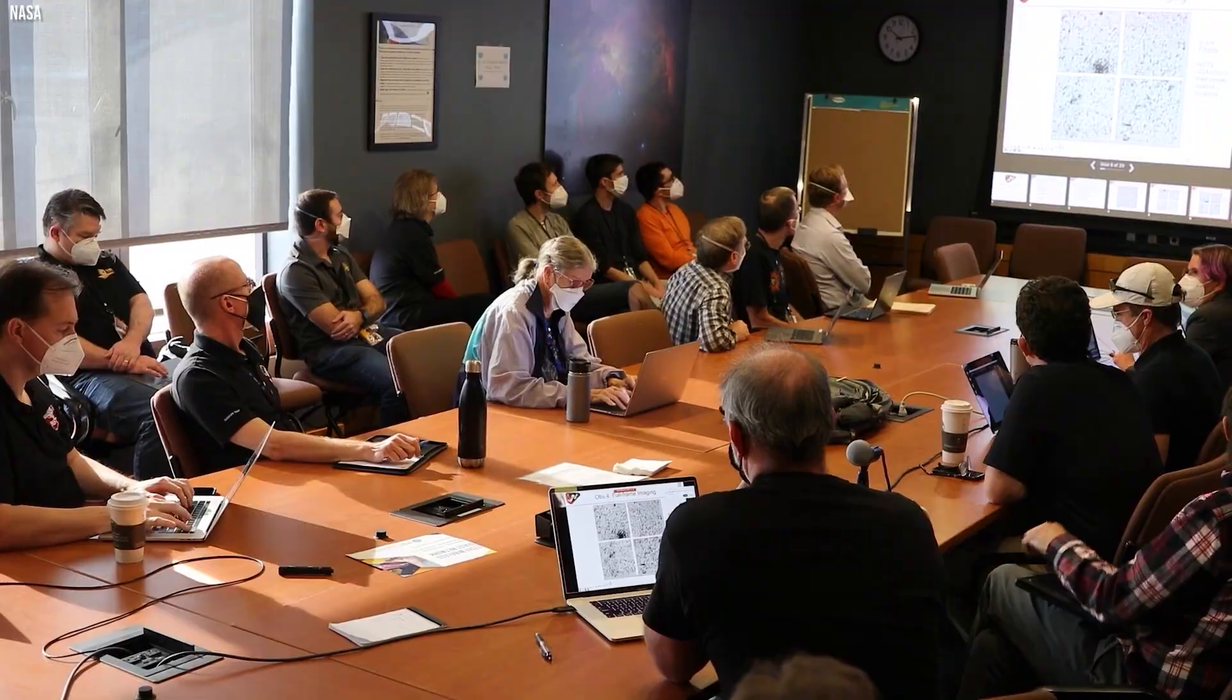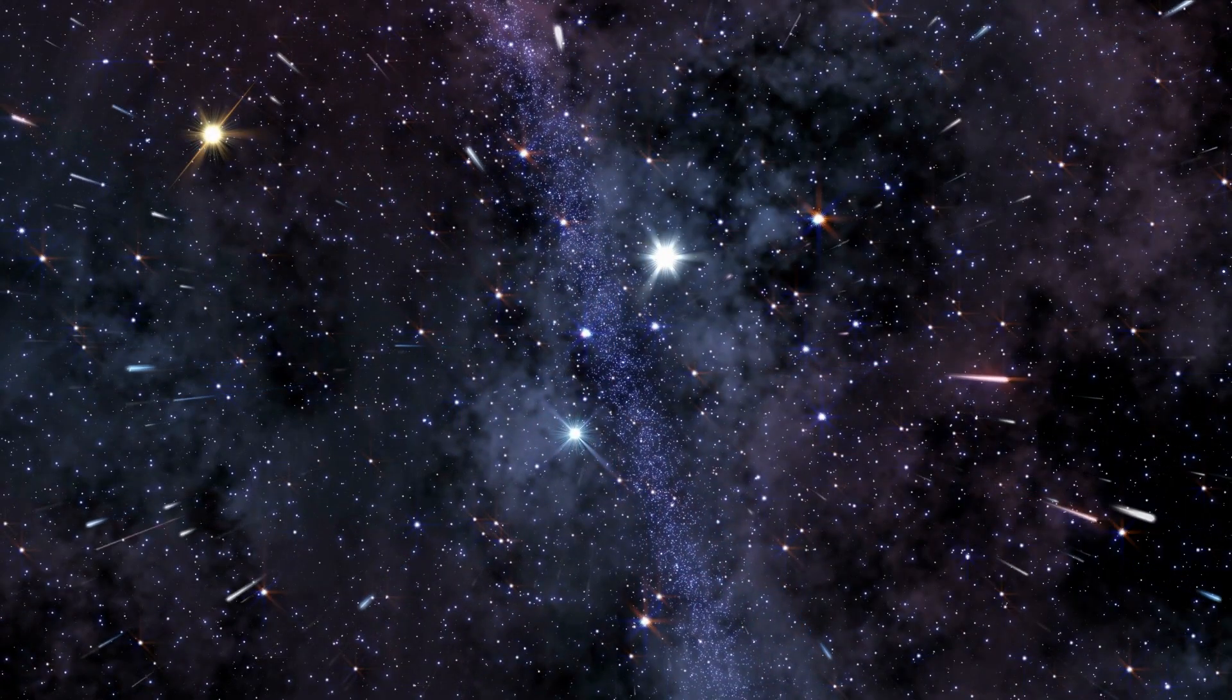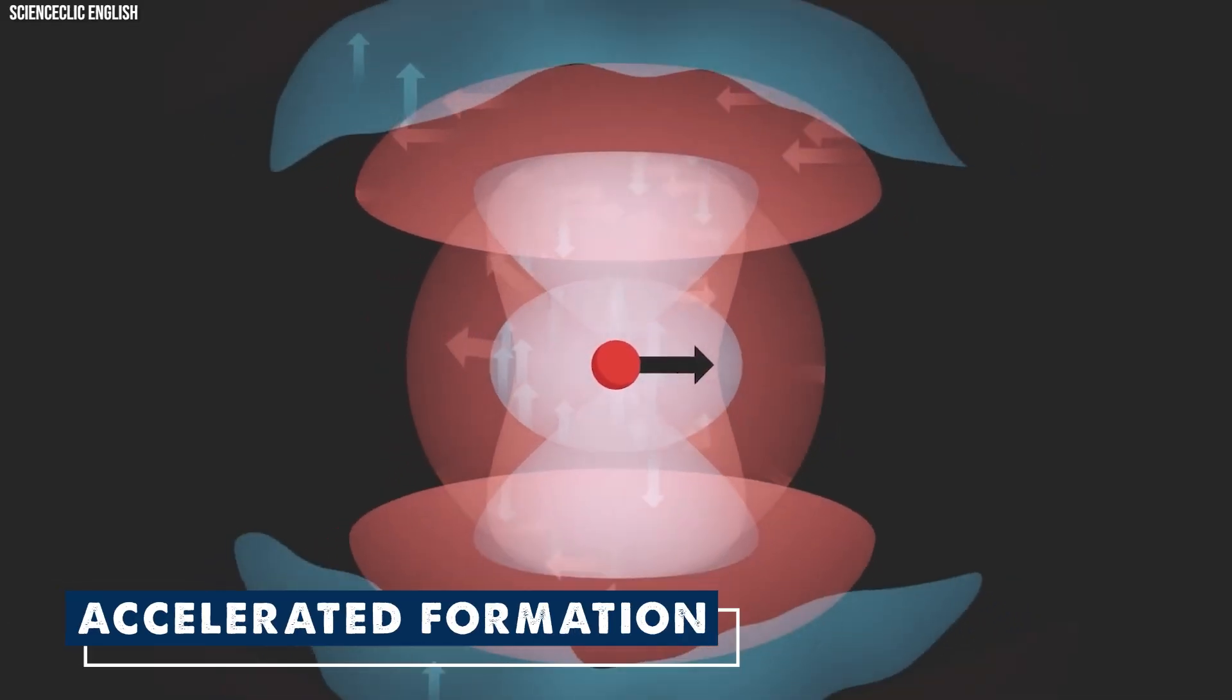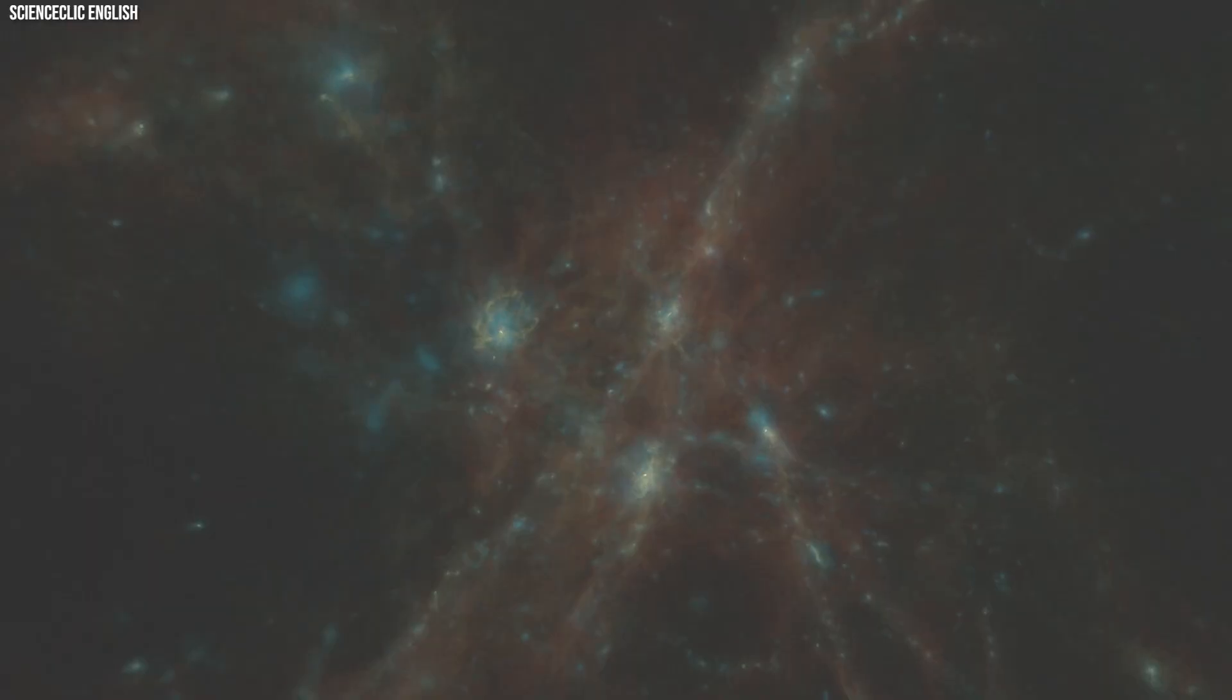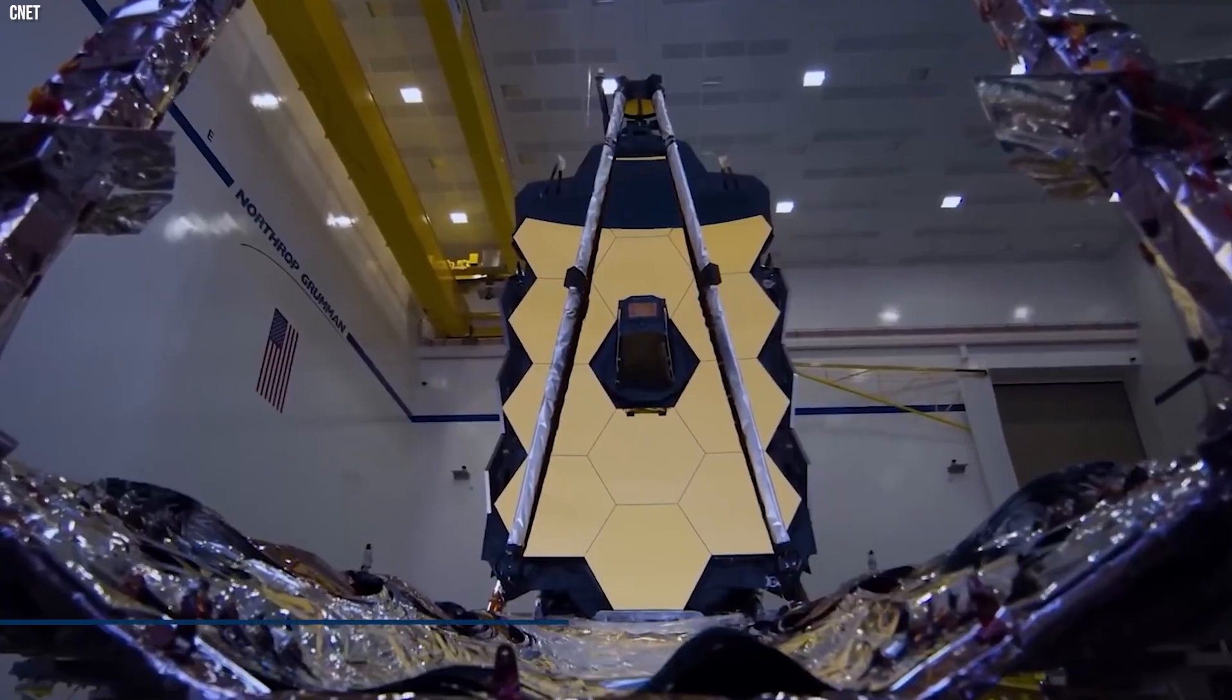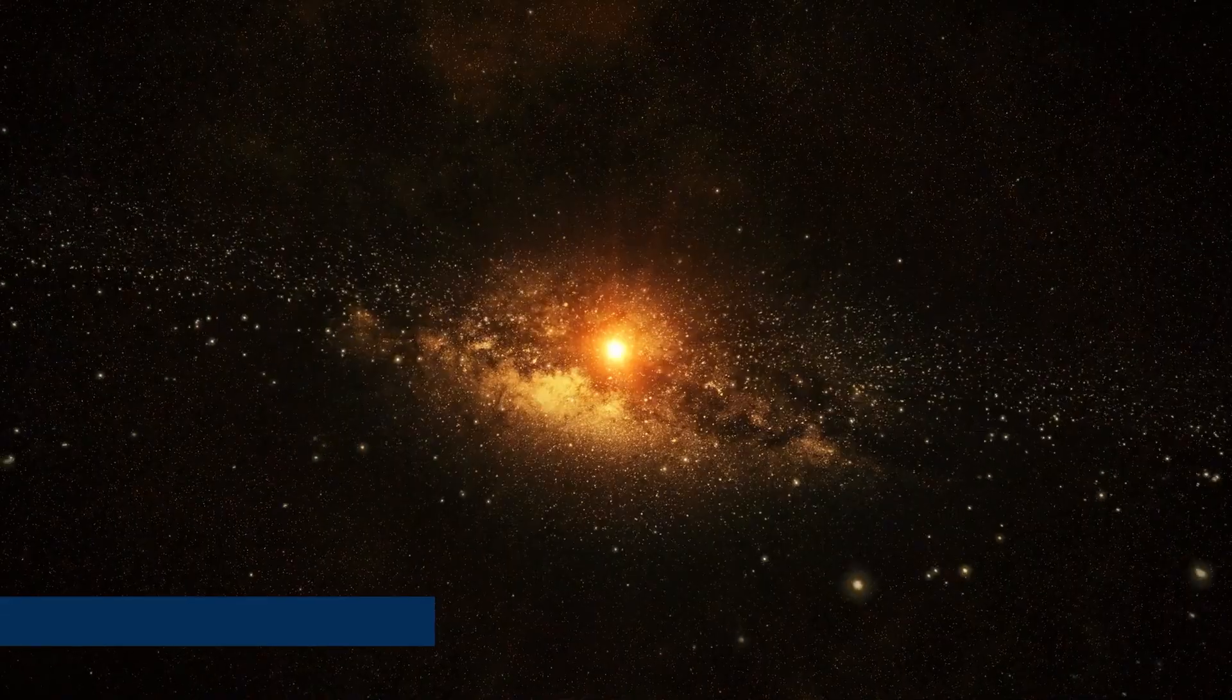Theories and Hypothesis. One proposed explanation suggests that immediately after the Big Bang, the universe underwent a more rapid expansion than previously thought. If this theory holds, it implies that galaxies could form much more swiftly than our prior understanding allowed. Such accelerated formation would necessitate the involvement of novel forces and particles in the galaxy-forming process. Regardless of the cause, it's evident that we find ourselves in uncharted territory concerning our comprehension of the cosmos. Another hypothesis suggests the existence of an unidentified process that facilitated the rapid and efficient formation of galaxies.